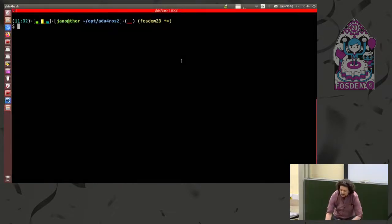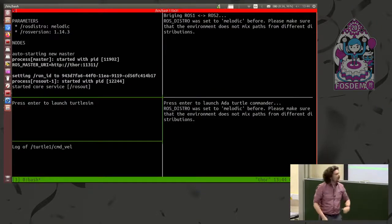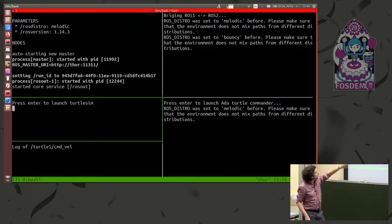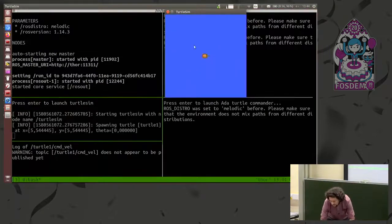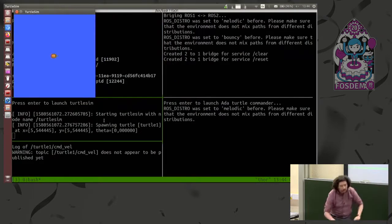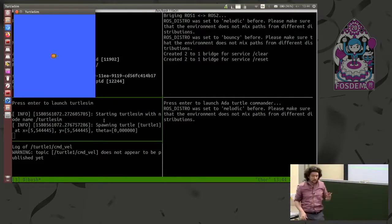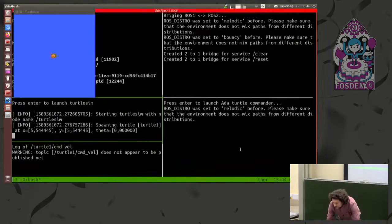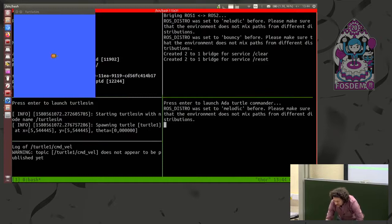Okay, so here, since this requires launching several things, the ROS1, ROS core, the bridge, and so on, I have everything scripted. Hopefully, everything will work. And first of all, here we have the ROS name server. Here I'm going to launch the simulator. Here it is. Now I'm going to launch the Ada client.